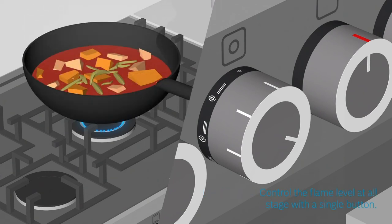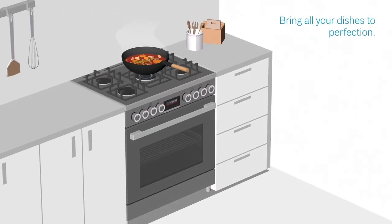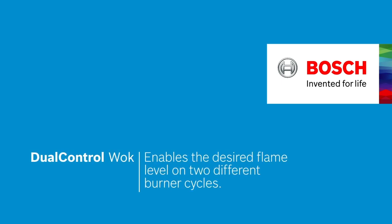So you can control the flame level at all stages of your cooking on a single burner by using a single button, allowing you to bring all of your dishes to perfection. This is the dual control wok for perfectly controlled cooking with a single burner. Bosch. Invented for life.